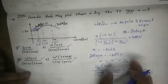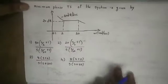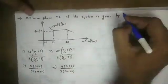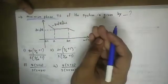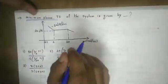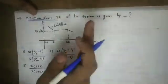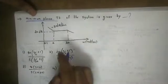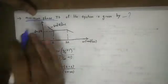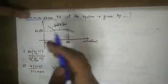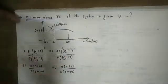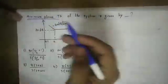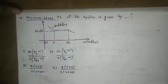That is the first question. If you have doubts, comment and post your question. Next, the second question: given a magnitude plot, the minimum phase transfer function of the system is to be found. Bode plots are always defined for minimum phase systems. For non-minimum phase systems, poles and zeros can lie on either the right or left side.